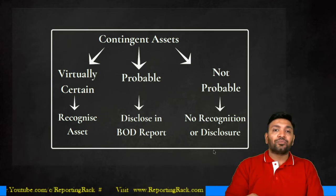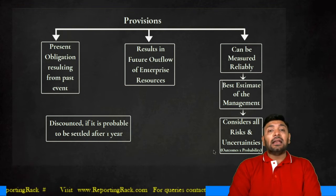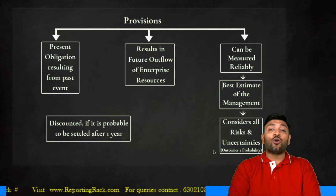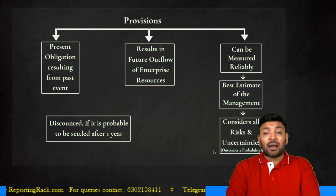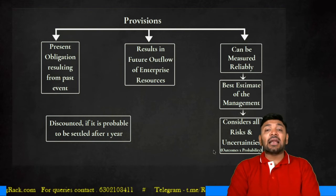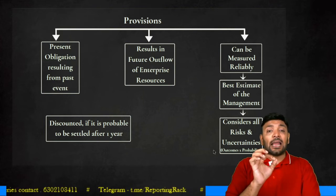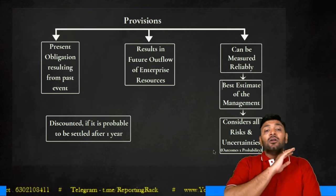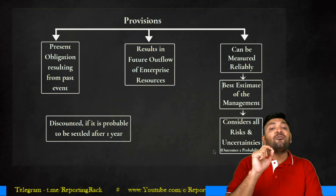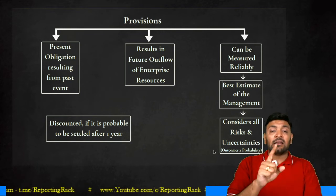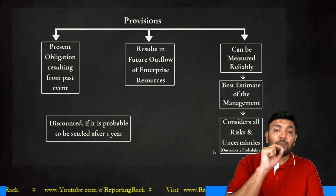A provision is a present obligation arising from a past event that results in a future outflow of enterprise resources, and such outflow can be reliably measured. Reliable measurement requires the best estimate of management, considering all risks and uncertainties. If the provision is payable within 12 months, no discounting is necessary. If it is payable beyond 12 months, it must be discounted — as we have seen in the case of provision for dismantling.